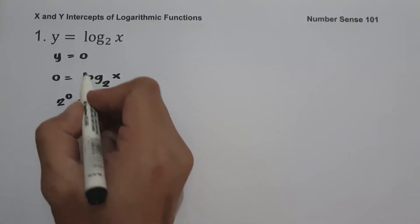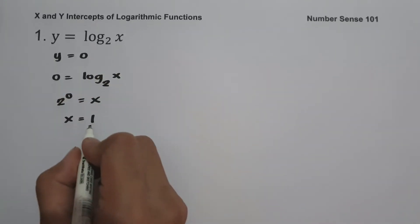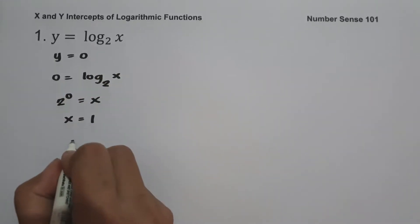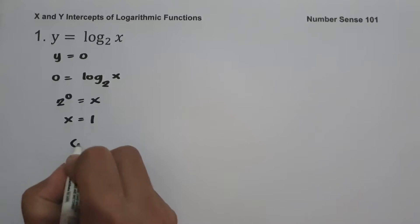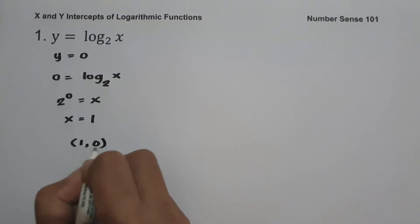Since the value of y is 0 and x is 1, our x-intercept is (1, 0).